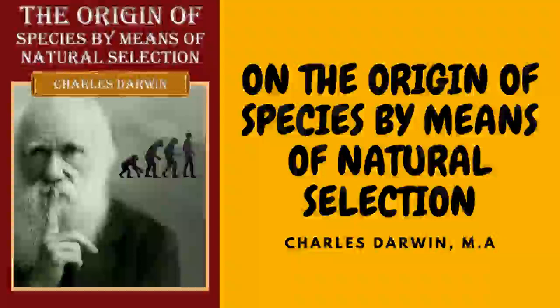But to extend the hypothesis so far as to suppose that species aboriginally as distinct as carriers, tumblers, pouters, and fantails now are should yield offspring perfectly fertile inter se seems to me rash in the extreme. From these several reasons — namely the improbability of man having formerly got seven or eight supposed species of pigeons to breed freely under domestication; these supposed species being quite unknown in a wild state; these species having very abnormal characters in certain respects as compared with all other Columbidae, though so like in most other respects to the rock pigeon; the blue color and various marks occasionally appearing in all the breeds both when kept pure and when crossed; the mongrel offspring being perfectly fertile — from these several reasons taken together, I can feel no doubt that all our domestic breeds have descended from the Columba livia with its geographical subspecies.